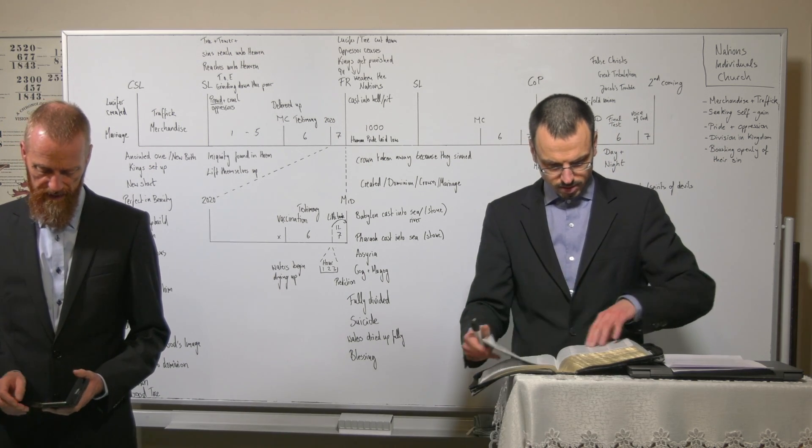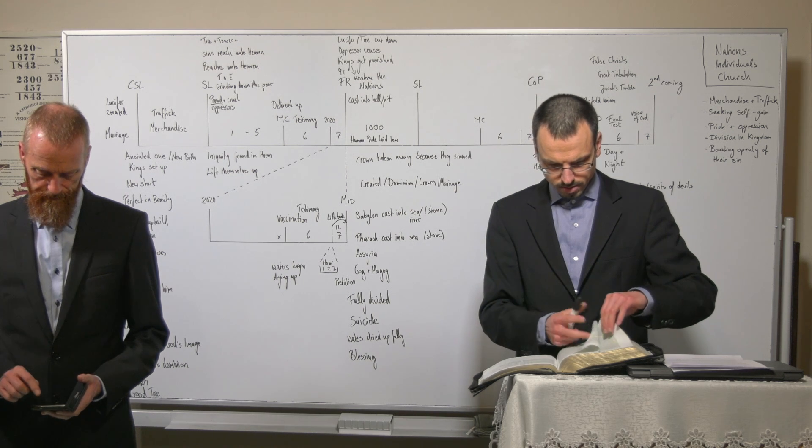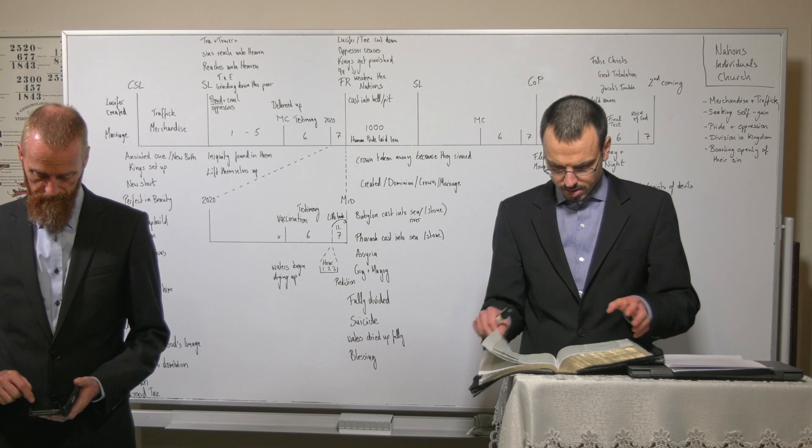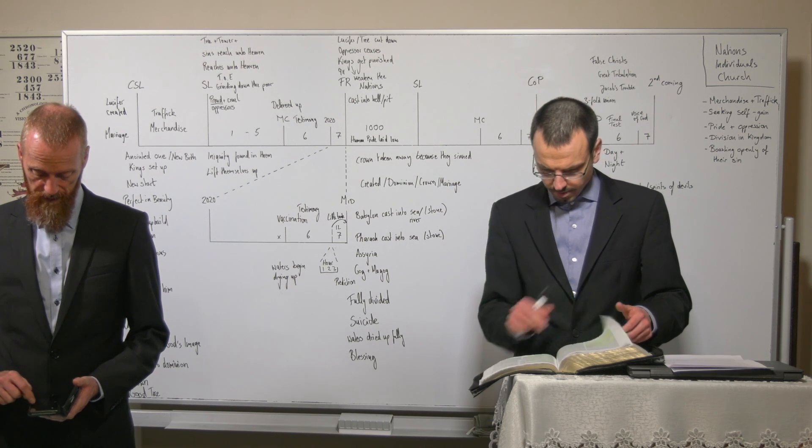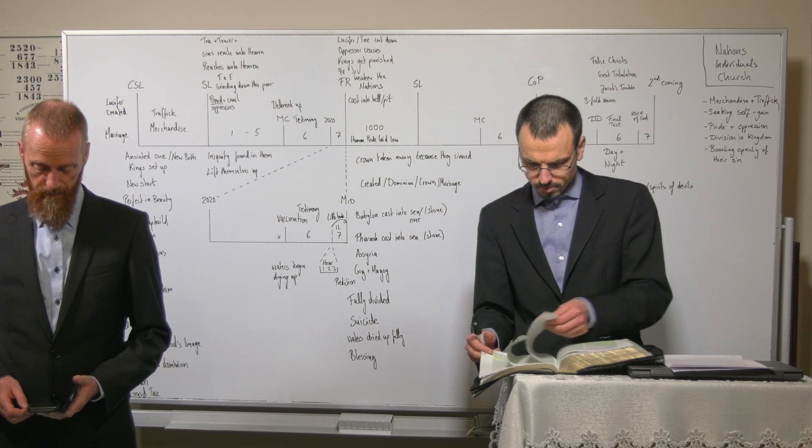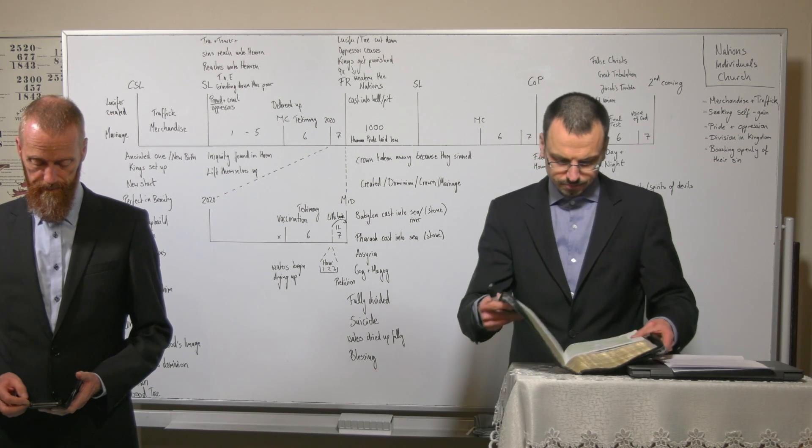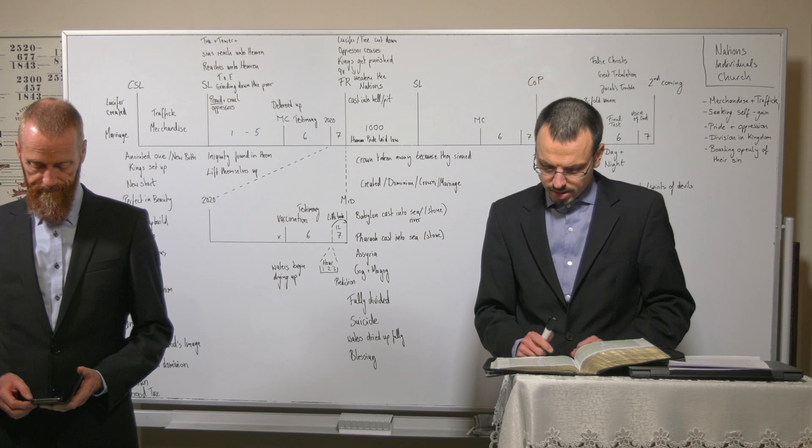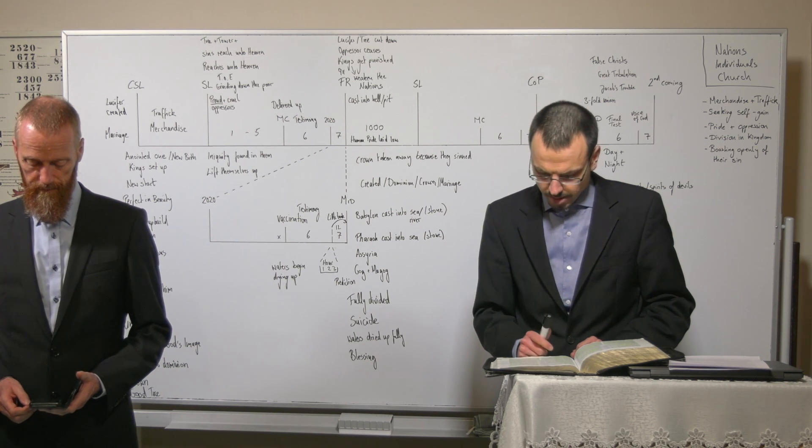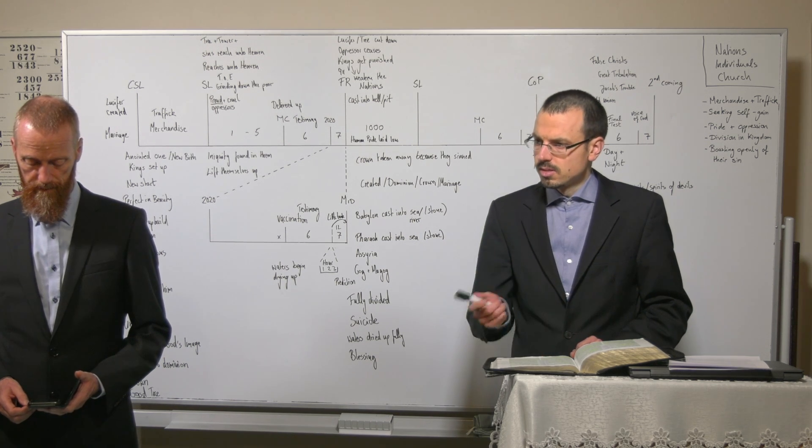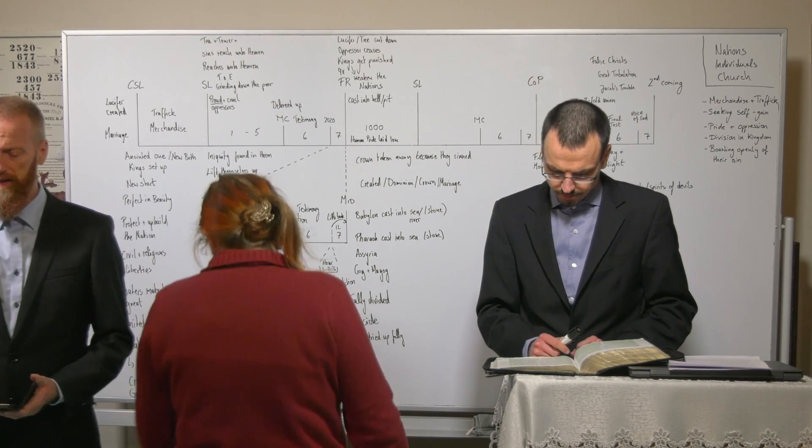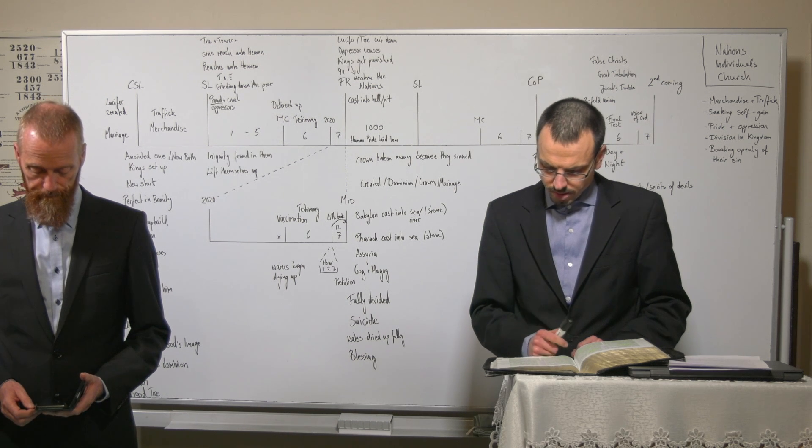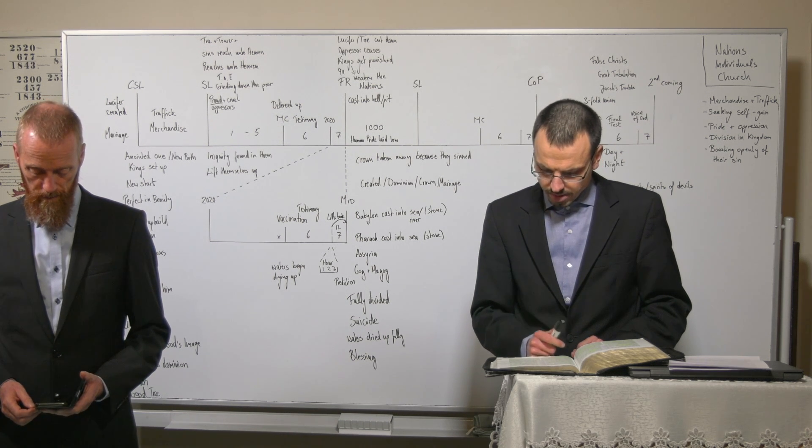And we already saw that all these kings get punished, and it's an illustration of the seventh plague. Let's go to the seventh plague again in Revelation chapter 16, verse 19. Here we can see the cities of the nations fall, and great Babylon came in remembrance before God to give unto her the cup of the wine of the fierceness of his wrath.